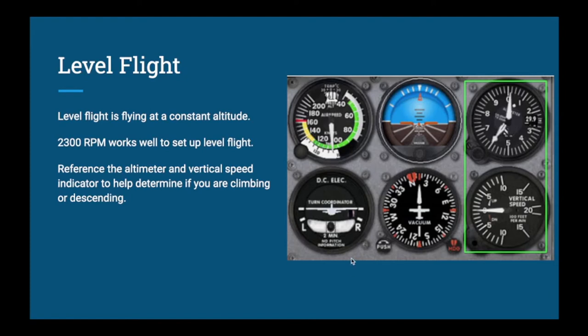For level flight — flying at a constant altitude — a good starting power setting for this exercise is 2,300 RPM, which is a cruise power setting for the Cessna 172. The instruments you'll be referencing are your altimeter, in the top right of the six-pack, and your vertical speed indicator, in the bottom right. It's very important that you do not stare at these instruments — look outside as much as possible, but glance at them for a second or two as needed.